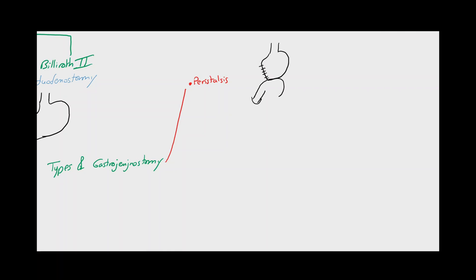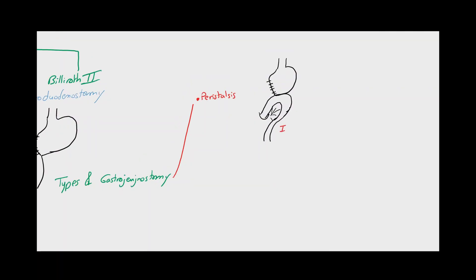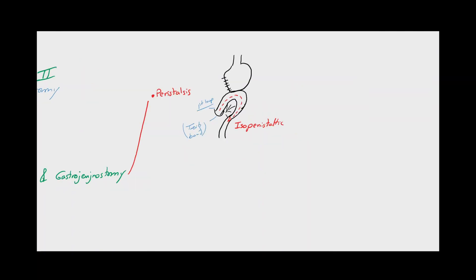The first two variations are according to the peristaltic movement of the small intestine. When the first jejunal loop is connected to the proximal part of the stomach in the same direction of its peristaltic movement, it's called isoperistaltic. Otherwise, it could be connected against the peristaltic movement, and it's called antiperistaltic gastrojejunostomy.